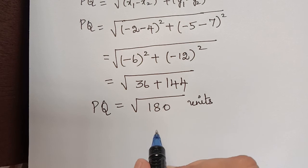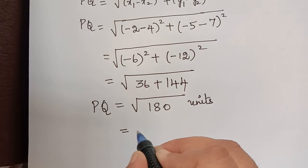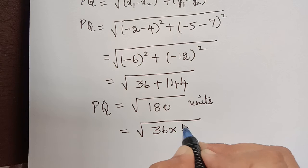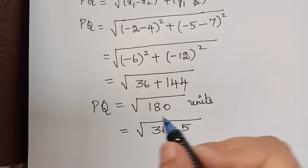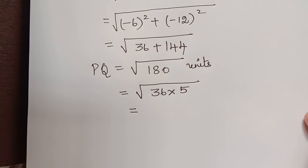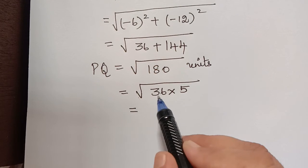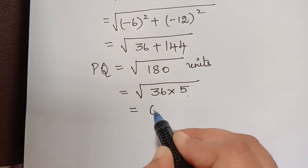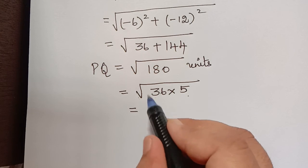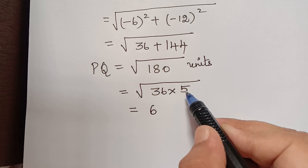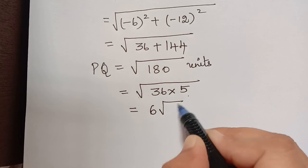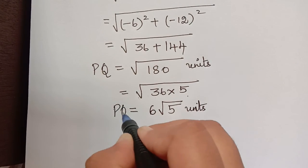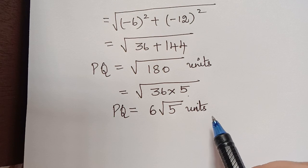You can leave it as such or simplify even more. 180 can be written as 36 multiplied by 5, because 36 times 5 gives us 180. So square root of 180 equals square root of 36 multiplied by 5. Taking 36 out of the square root gives us 6, since square root of 36 is 6. But we still have 5 inside the square root, so this becomes 6 square root of 5 units. This is how we find the distance between two points. Thank you.